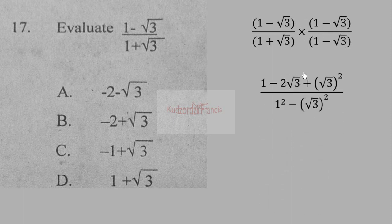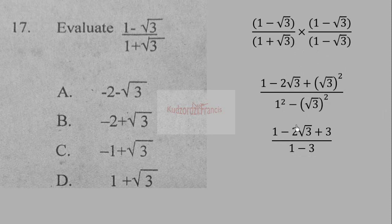Expanding the numerator gives 1 − 2√3 + (√3)² = 1 − 2√3 + 3. Expanding the denominator using the difference of two squares gives 1² − (√3)² = 1 − 3. So we have (1 − 2√3 + 3) / (1 − 3), which simplifies to (4 − 2√3) / (−2).